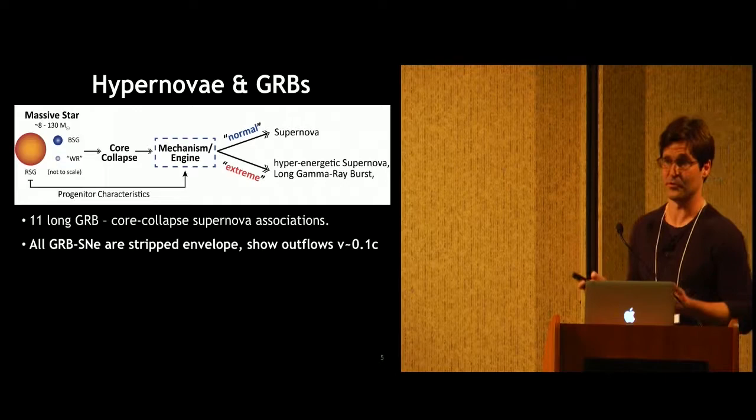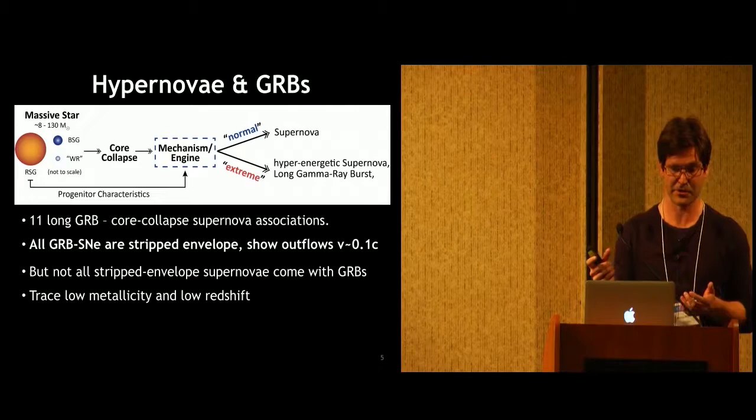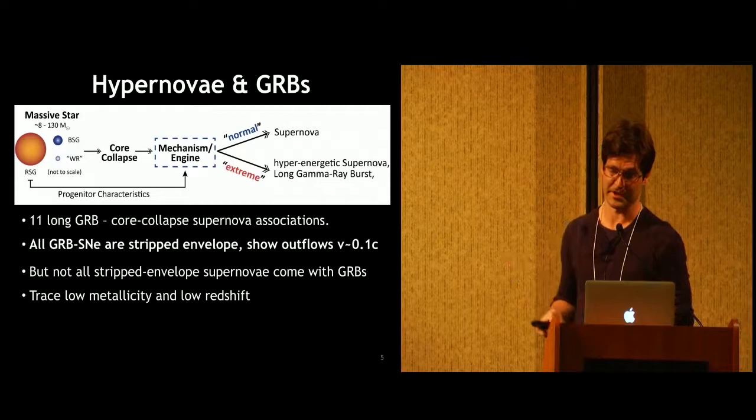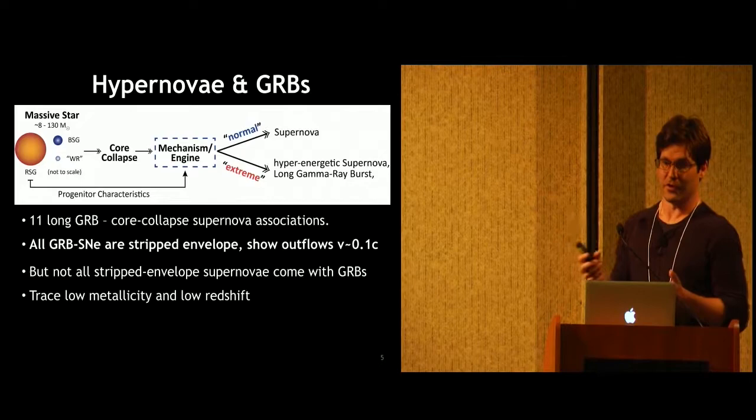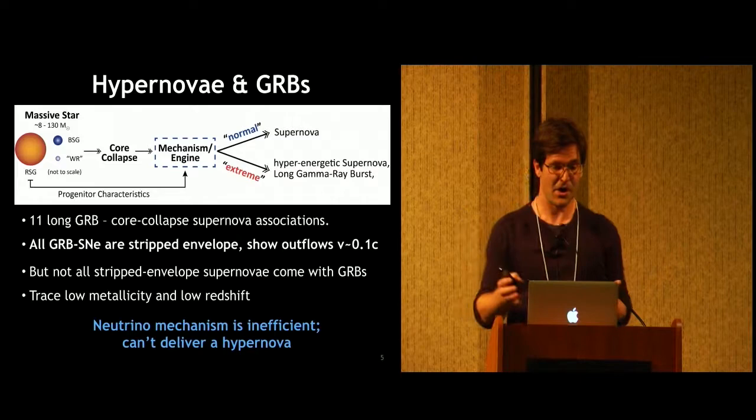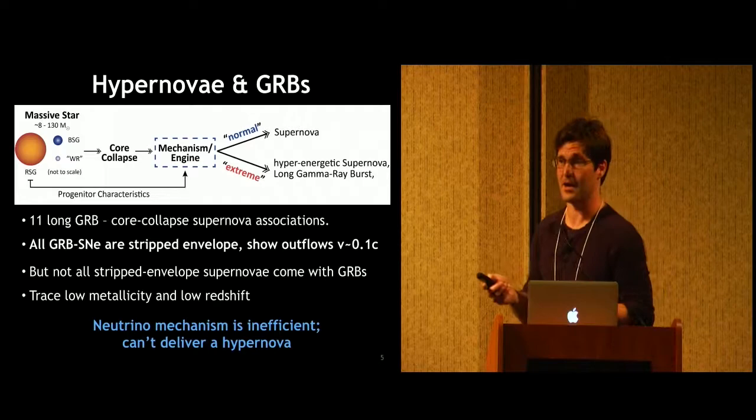We have 11 of these long GRB supernova associations that are verified by now, so we know that there's something driving these explosions and these GRBs that are the same engine. All of these show relativistic outflows, so meaning material moving at a good fraction of the speed of light. All of these supernova are stripped envelopes, meaning they show no hydrogen and no helium in their spectrum, but not all stripped envelope supernova come with GRBs, so there has to be something in how the engine operates that's really triggering whether we get an additional GRB or not, or just get what we call a type 1c broadline supernova explosions. They all seem to form in low metallicity and low redshift environments.